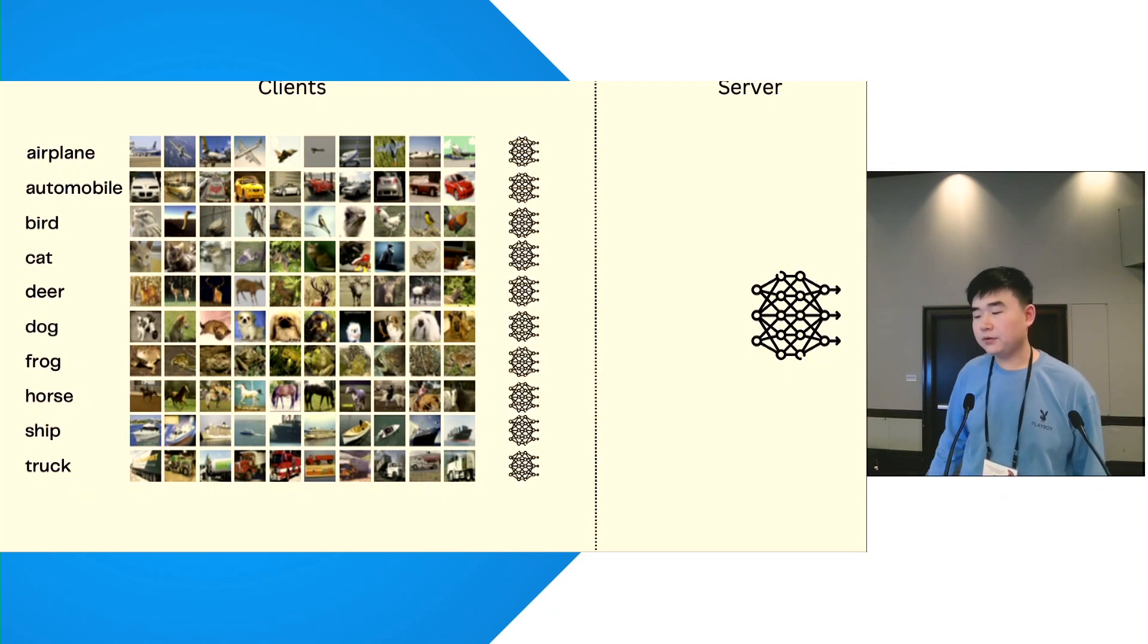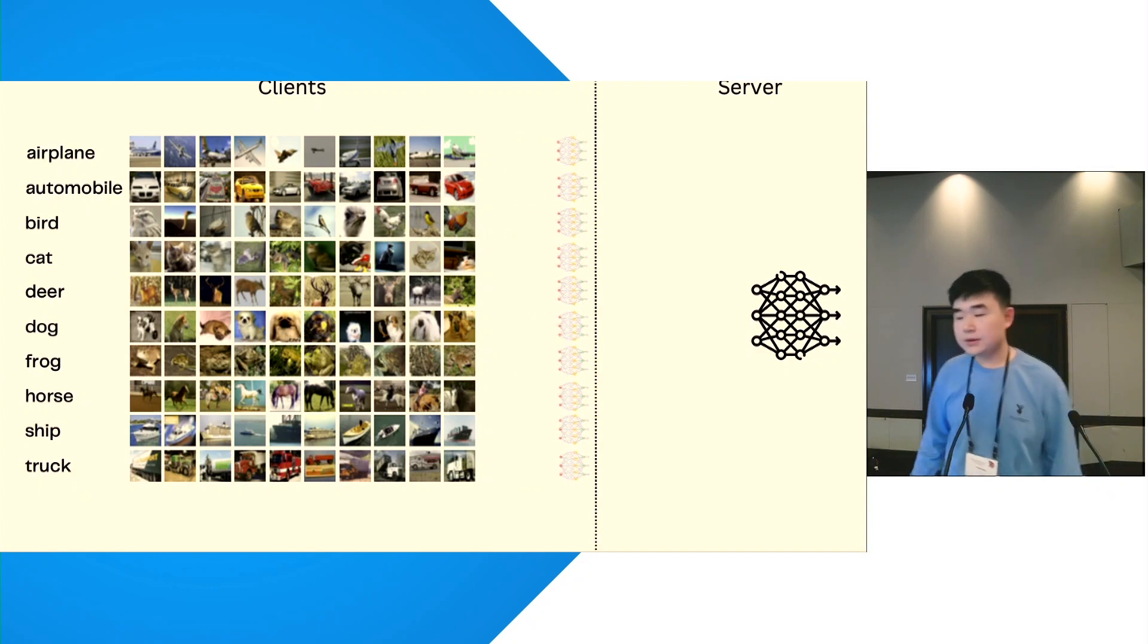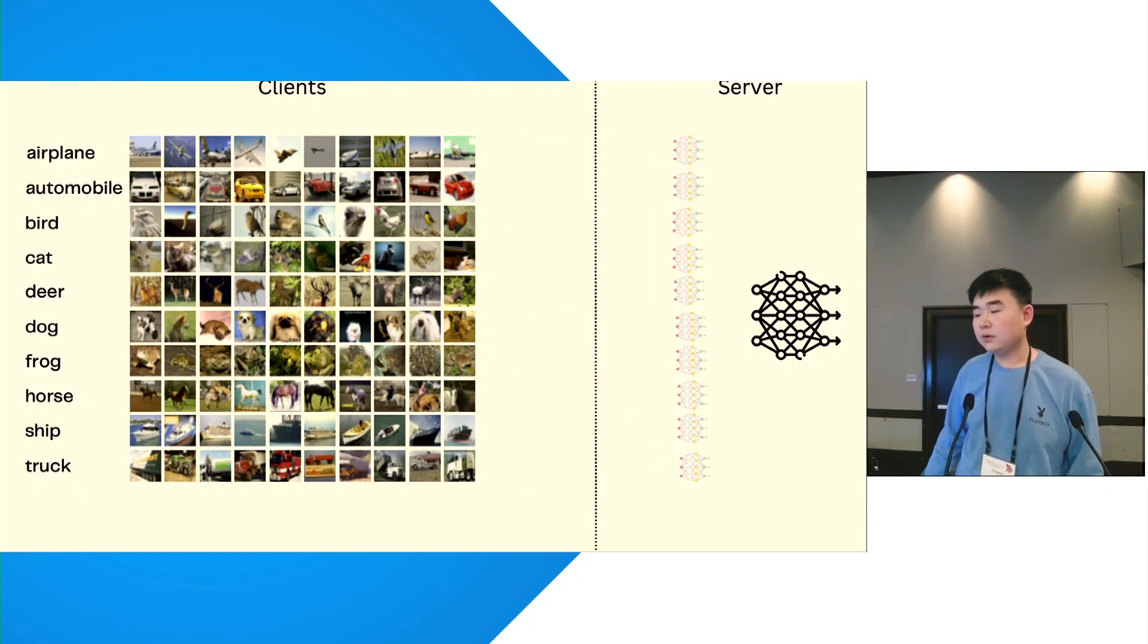Clients receive the model from the server, train the model on their local data set, and return the model back to the server for aggregation.